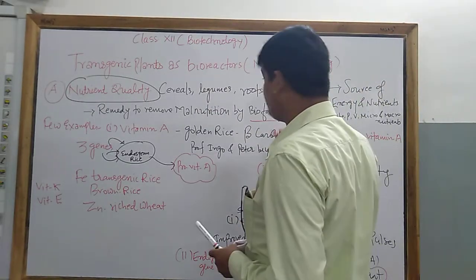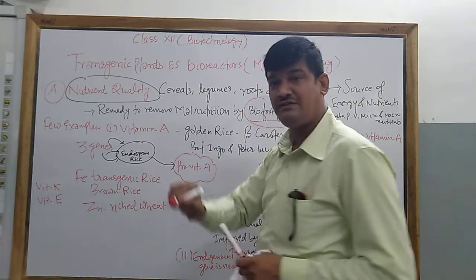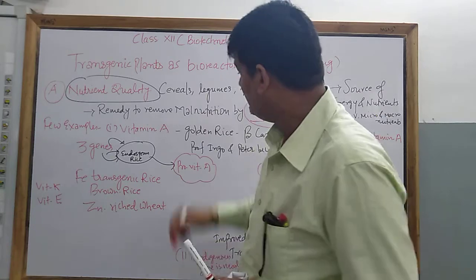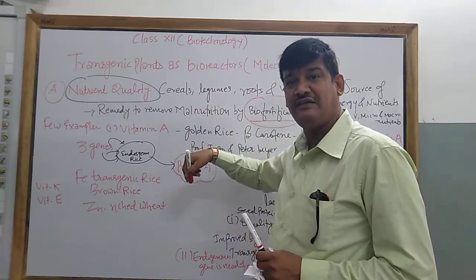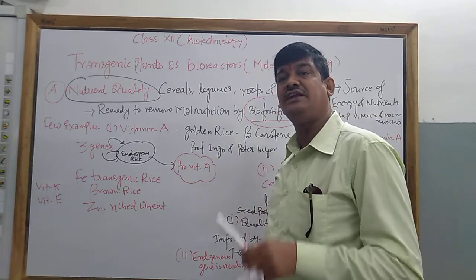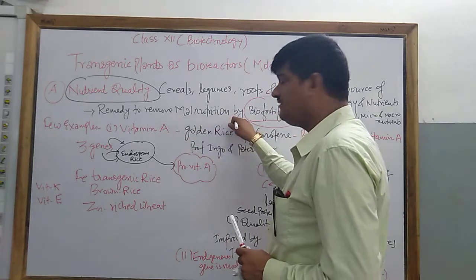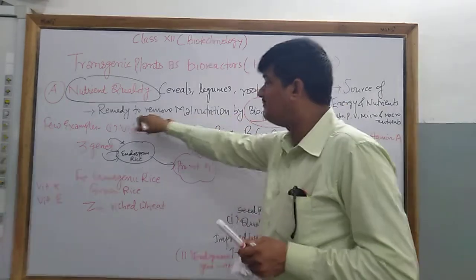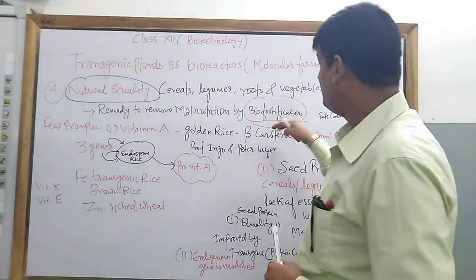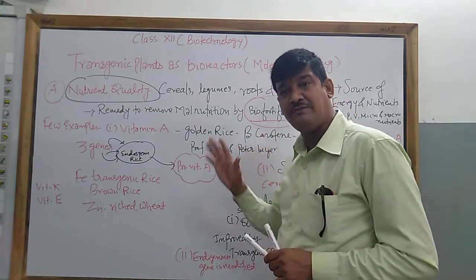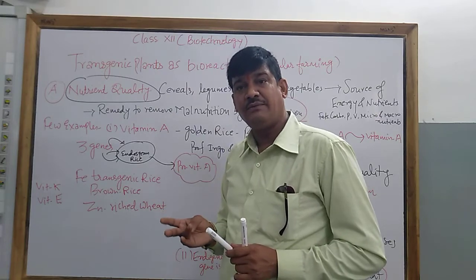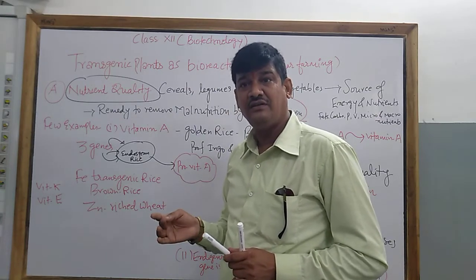It provides a remedy to remove malnutrition by the process called biofortification. Biofortification means to increase the useful chemical substances present in the crop by a plant breeding program or by genetic engineering. Malnutrition can thus be removed by biofortification of particular crop plants. The chemical substances involved include micro and macronutrients, proteins, carbohydrates, fats, and amino acids.